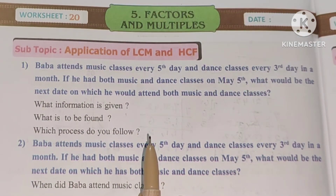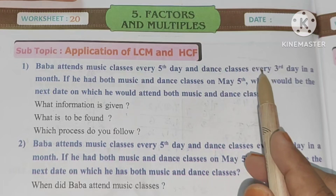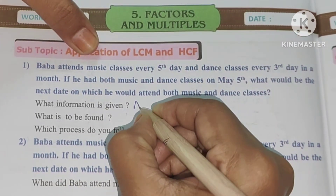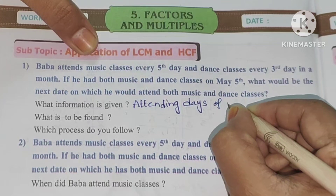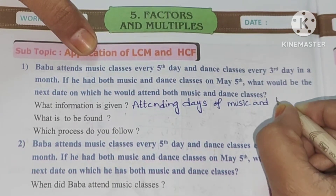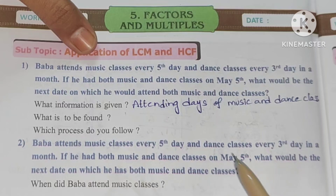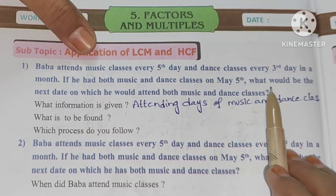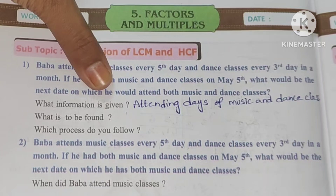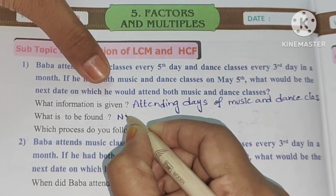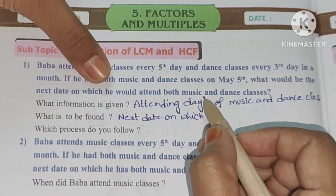What information is given? The attending days of dance and music are given — attending days of music and dance class in a month. What is to be found out? The next date on which he would attend both music and dance classes.